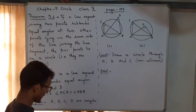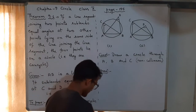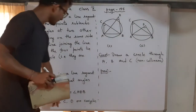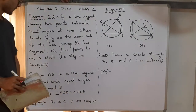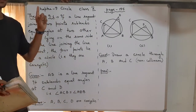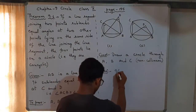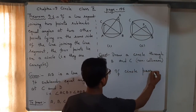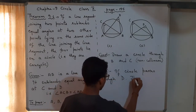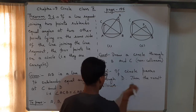Now suppose the circle passes through D. If it passes through D, then the result follows directly — A, B, C, D are concyclic and the proof is done. But what happens if the circle does not pass through D?